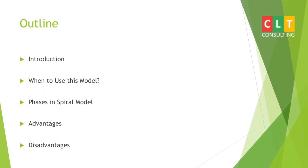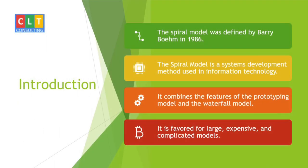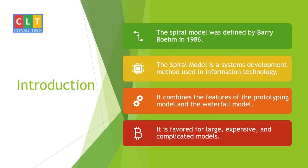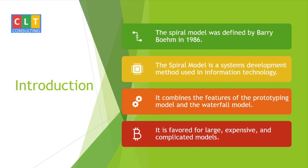Moving to the introduction part: the Spiral Model was defined by Barry Boehm in 1986. The Spiral Model is basically used for the Software Development Life Cycle to build particular software. It contains the features of the Prototyping Model and the Waterfall Model.